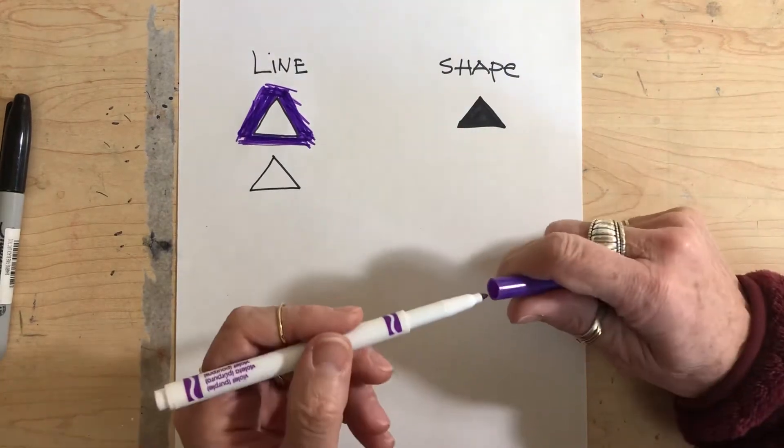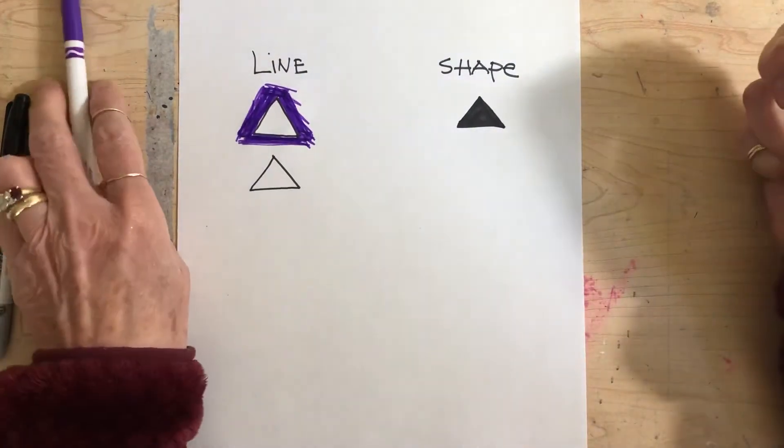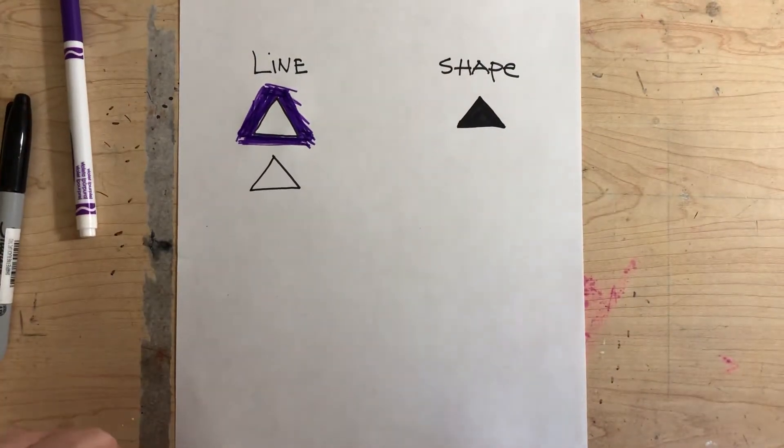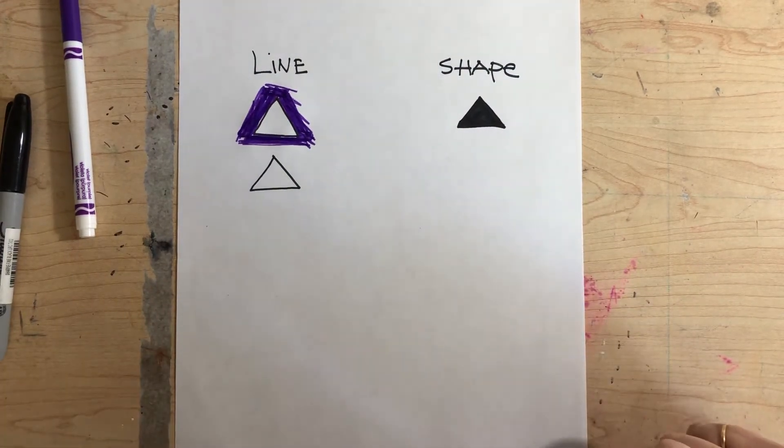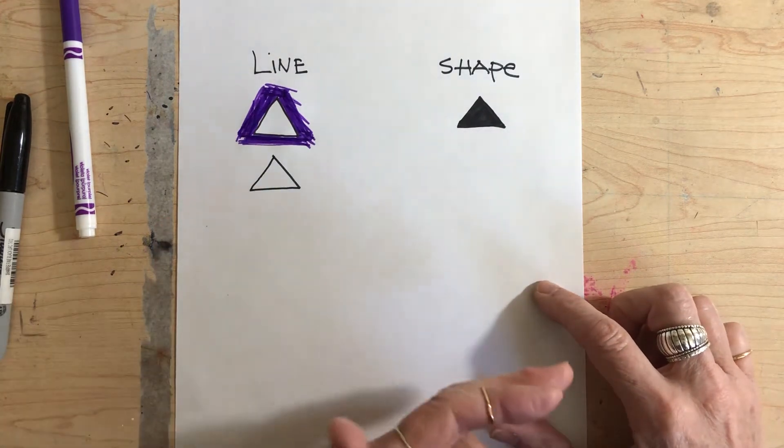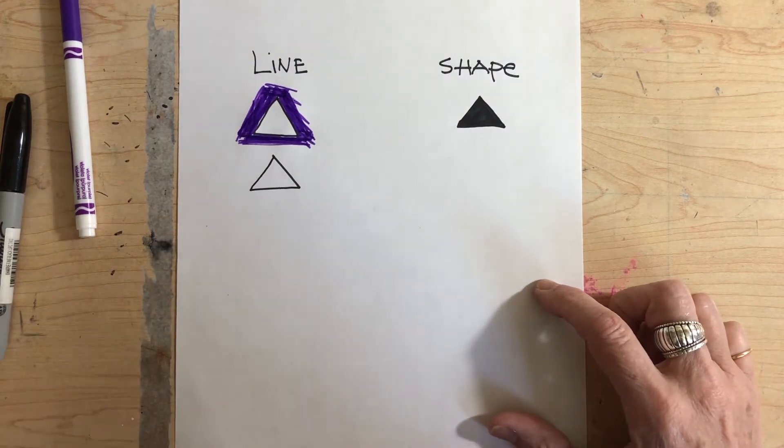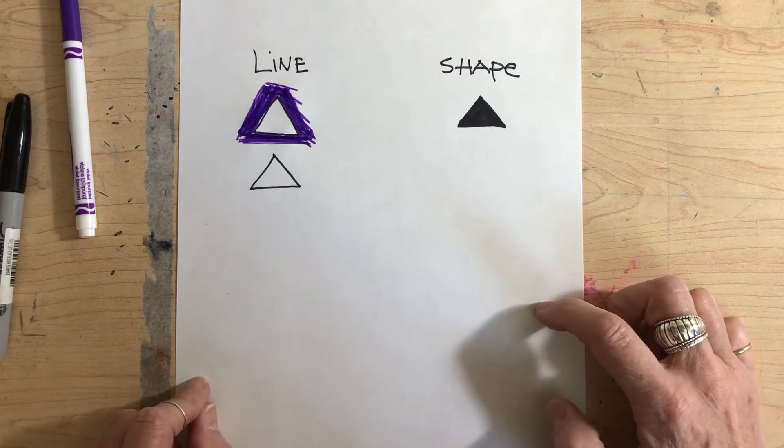All right, so a shape does not have an outline. It is a two-dimensional area without an outline. It could be solid like that, might have a design on it in some cases.